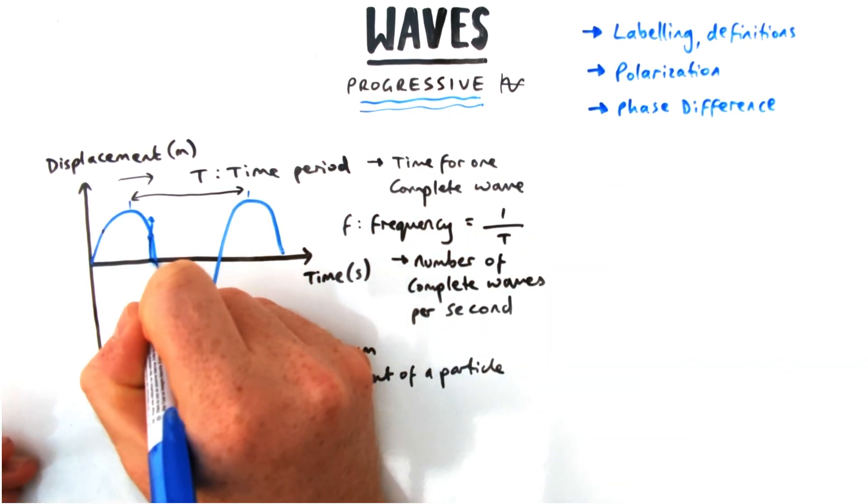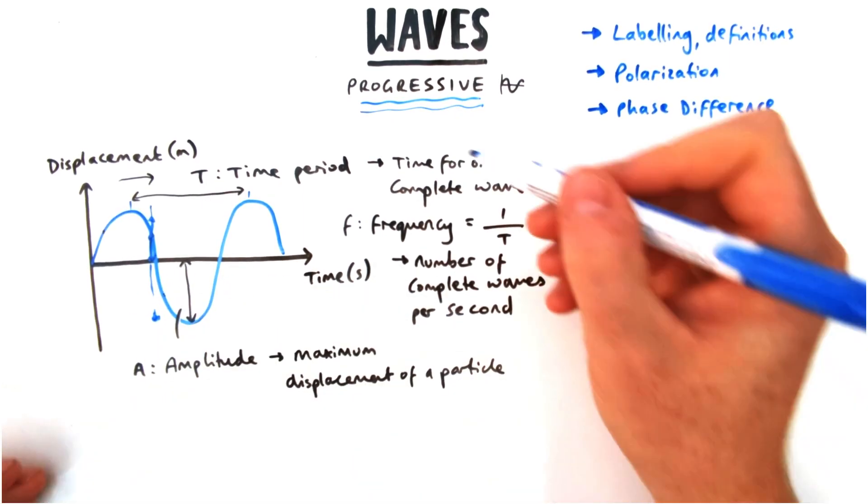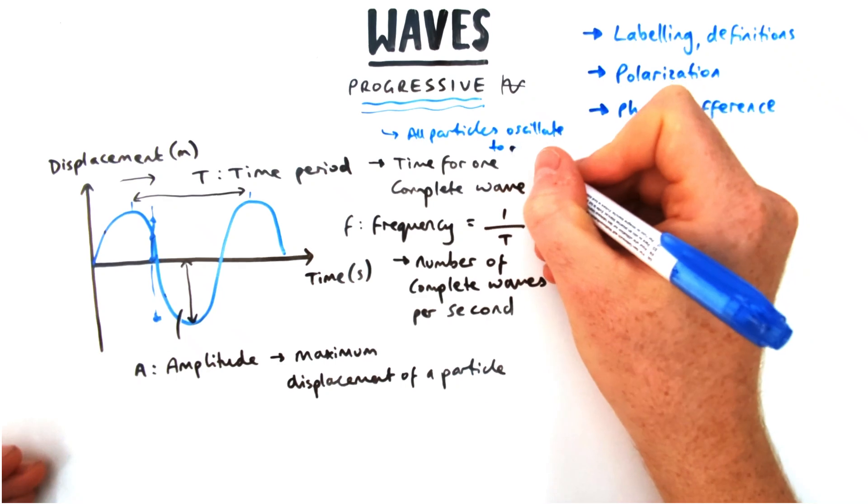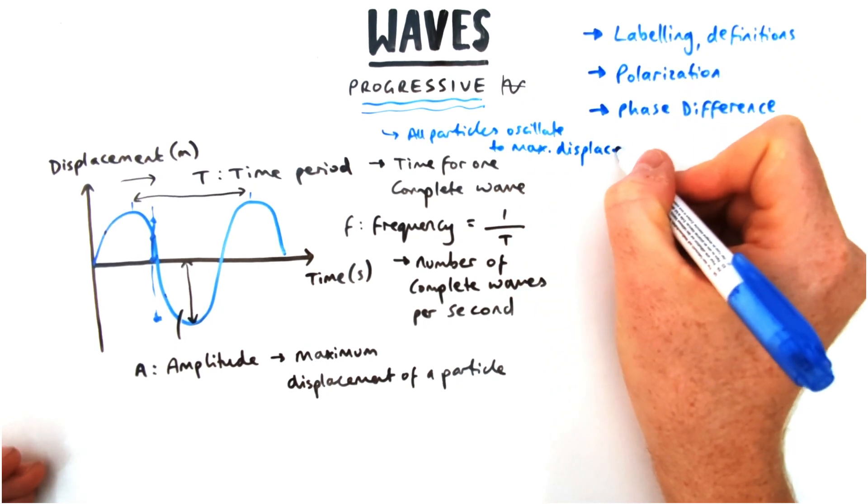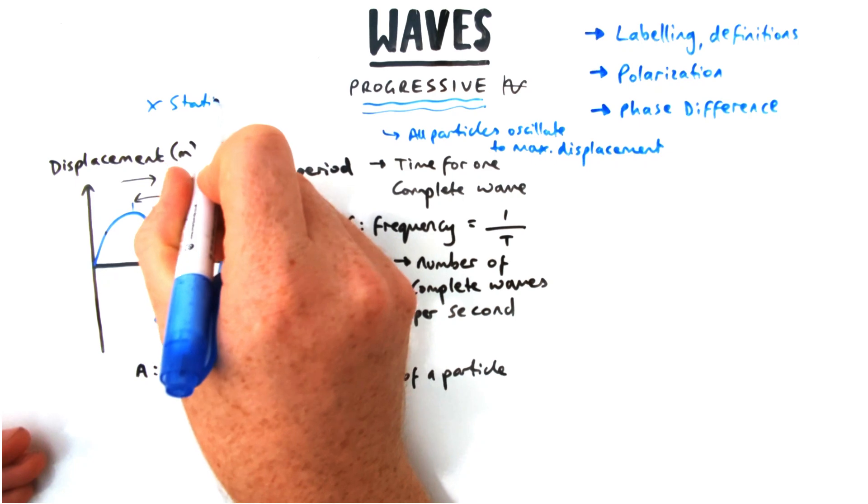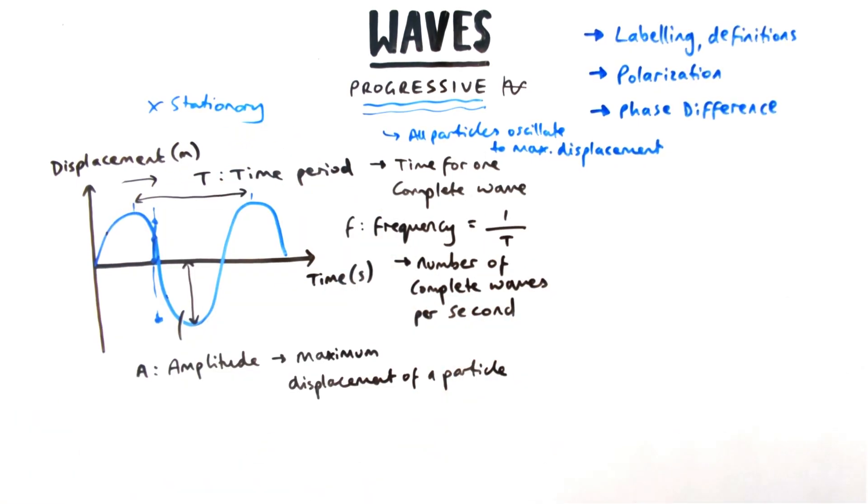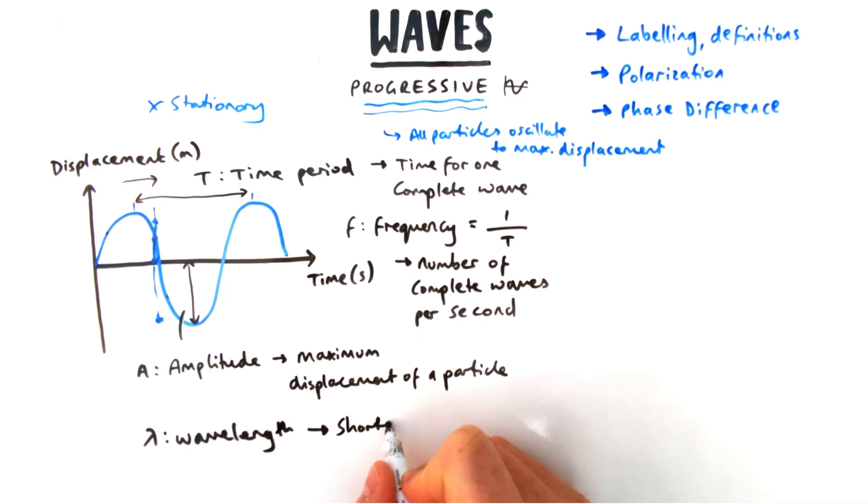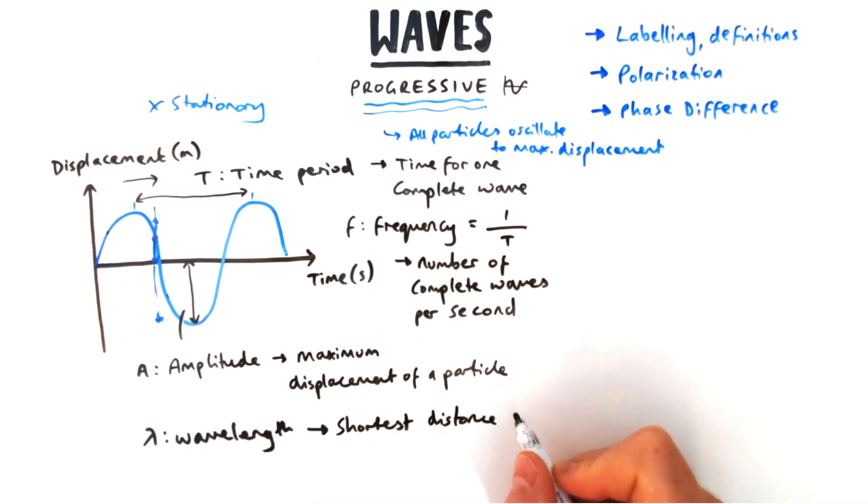Because it's a progressive wave, that means it moves. So in this case we're moving left to right. The particles we see on the screen are going to be moving up and down depending on whether the wave has a peak coming up to them or a trough coming up to them. All particles oscillate to the maximum displacement just at different times, which is not the same on a stationary wave, which you can see in my other video.